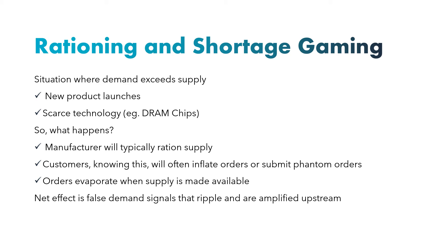The second cause is rationing and shortage gaming. When there is a new product launch, demand increases but due to limited resources, supply goes down. So the manufacturer will typically ration the supply — instead of giving 100 units to a single customer, it gives 20 units to 5 customers. Customers, knowing this, place phantom orders of 1000 units so that they receive 100. When supply balances out, all those phantom orders disappear, and this contributes to the bullwhip effect.